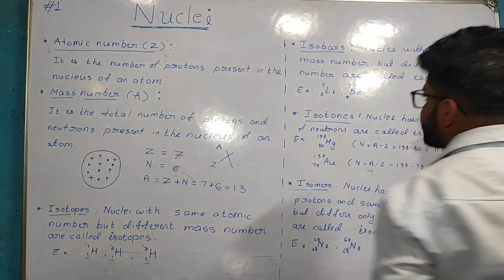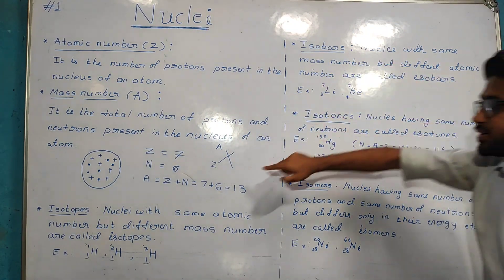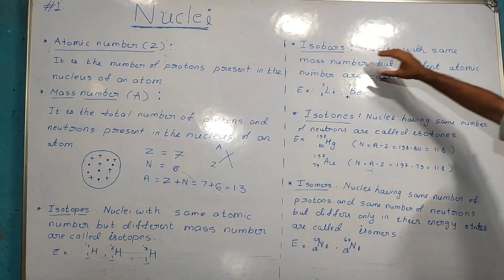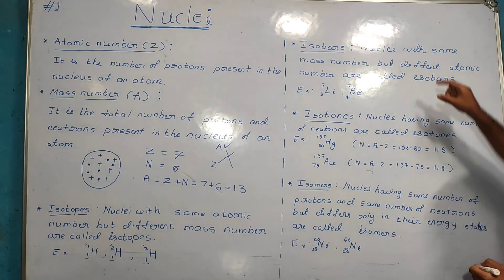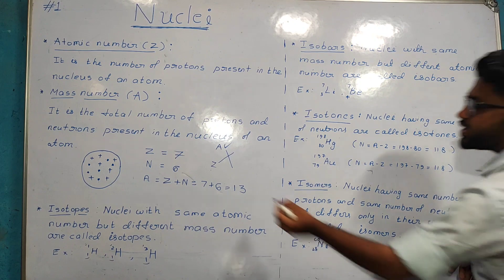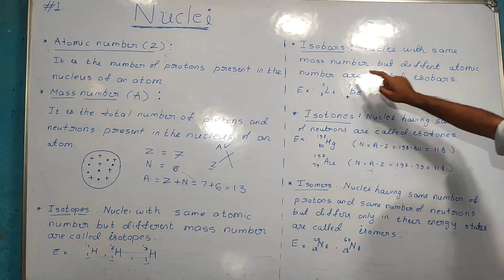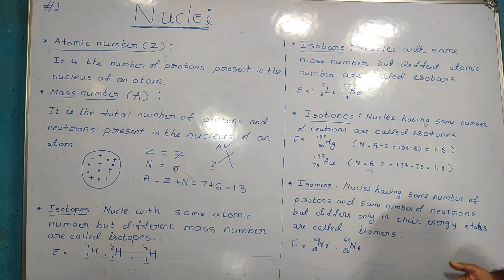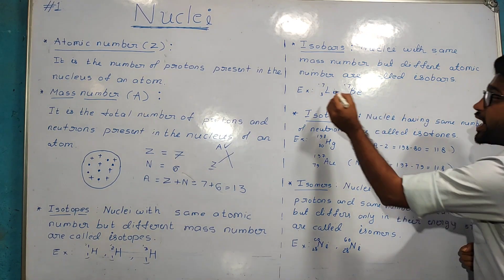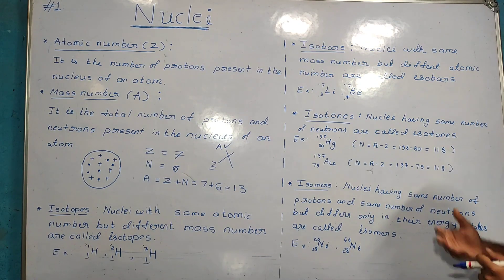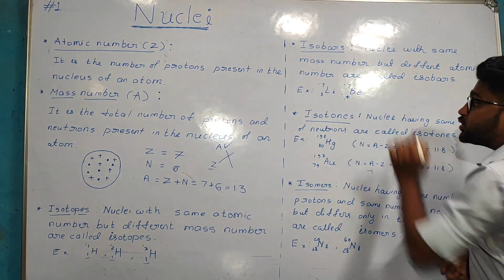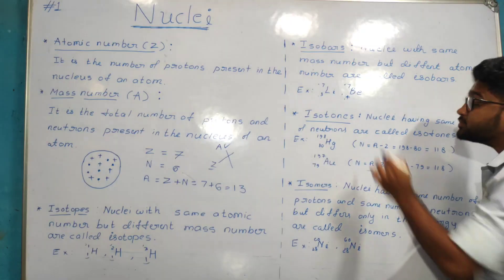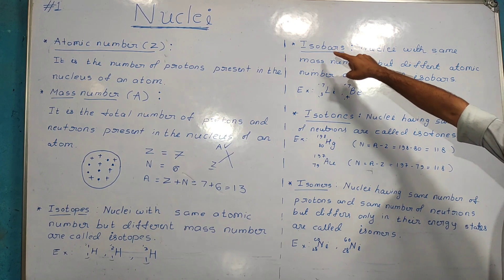The mass number is the same, but the atomic number is different. For example, lithium and beryllium — the mass number is 7 for both, it is the same. But the atomic number is 3 and 4 respectively, which is different. These are two nuclei having the same mass number but different atomic number, so they are called isobars.